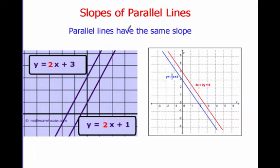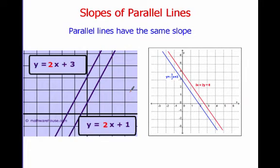Let's talk about the slopes of parallel lines. Slopes of parallel lines are exactly the same — if two lines are parallel, they have the same slope. For example, looking here, y equals 2x plus 3 and y equals 2x plus 1. Parallel lines have the same slope but different y-intercepts.